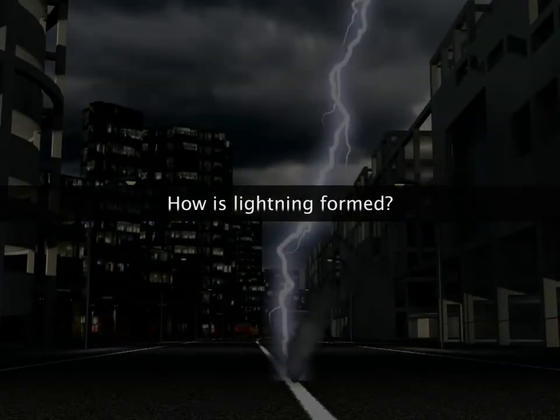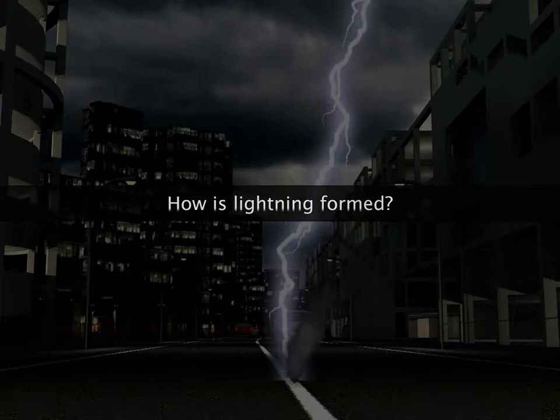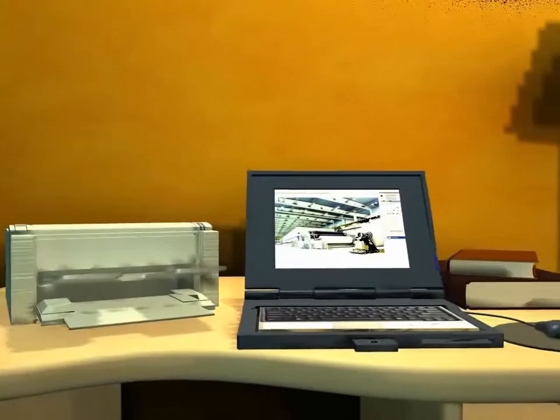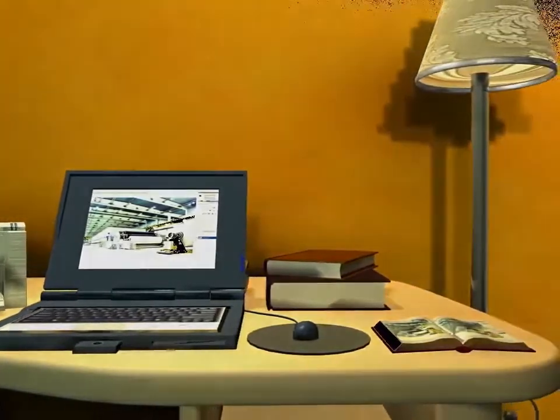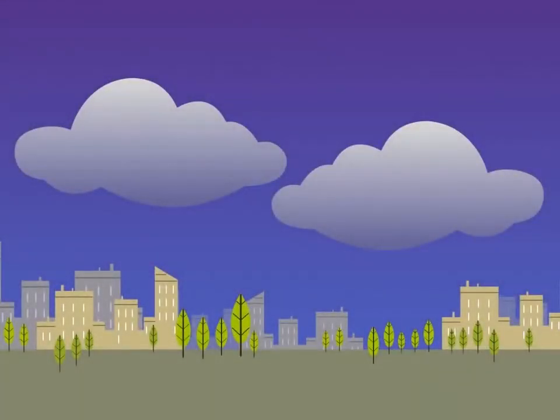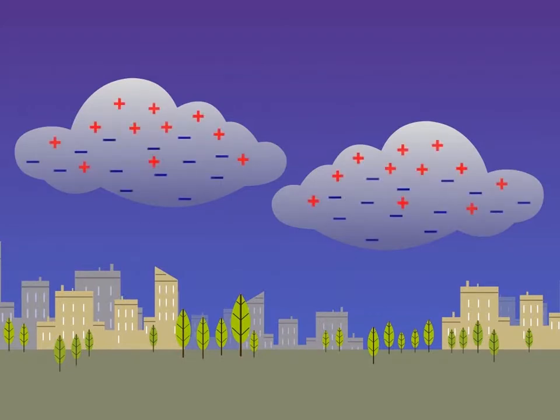Have we ever wondered how lightning is formed? Every object in nature has a charge. Similarly, the water droplets in the clouds have a charge too.